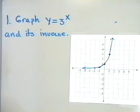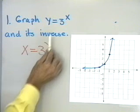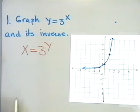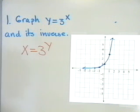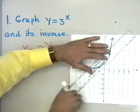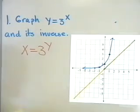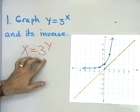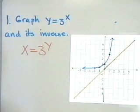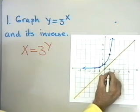The graph of its inverse is the graph of x equals 3 to the y, because to find the equation of the inverse of a function, we simply exchange x and y in the equation. Now, I could graph this by finding ordered pairs, but there's an easier way: first, draw the line y equals x. Here's the line y equals x. The graph of y equals 3 to the x and the graph of x equals 3 to the y will have symmetry about the line y equals x. So, I'll graph this function by reflecting the blue graph around the line y equals x.